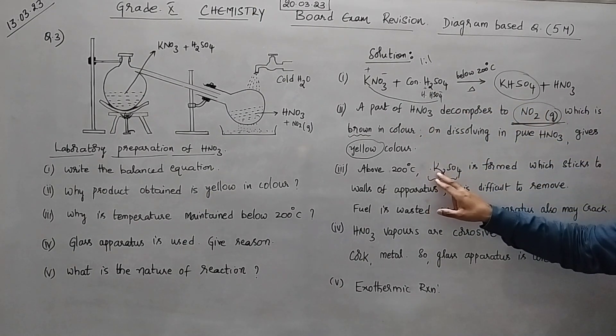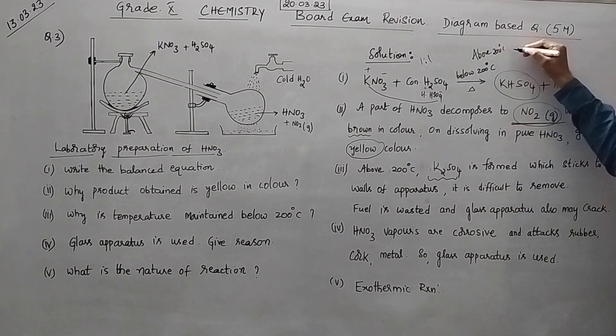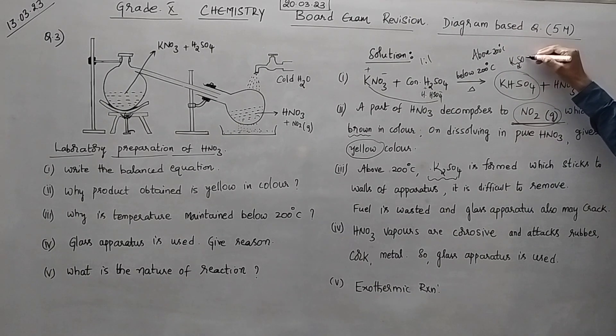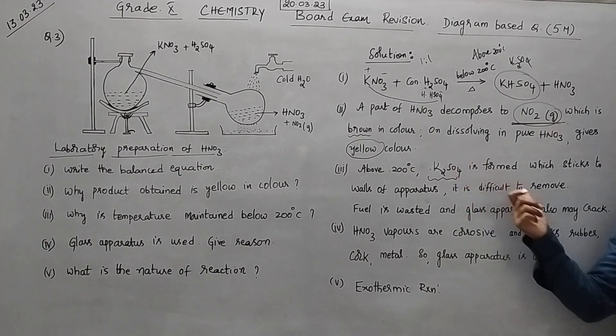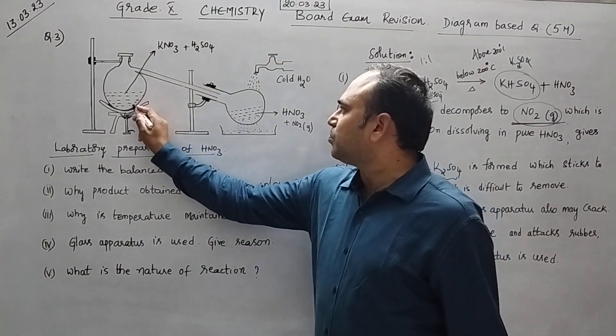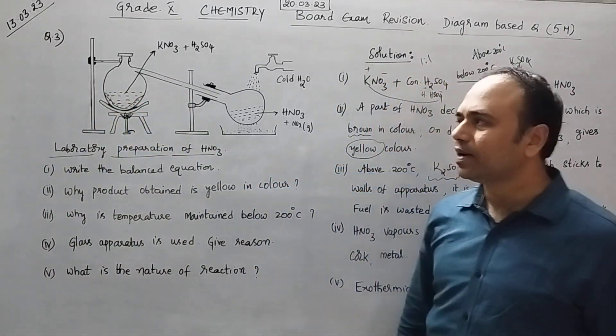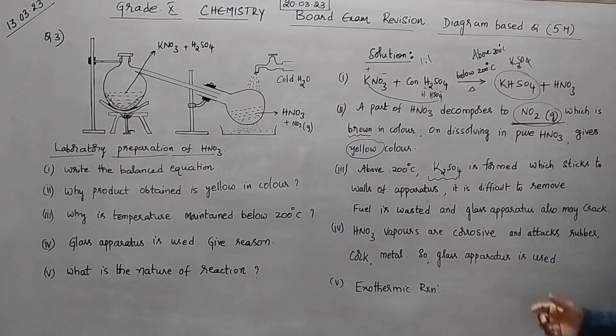If you are taking NaNO3 will get sodium sulphate. And if you take KNO3 will get K2SO4. So that means above 200, above 200 you have K2SO4 formation. What is the nature of K2SO4? It is very sticky in nature. So therefore this K2SO4 which is formed here will stick to the walls of this RBF round bottom glass and it is very difficult for us to clean the apparatus.